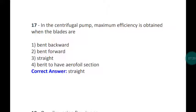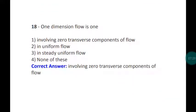Question number eighteen: One-dimensional flow is what? One-dimensional flow means it involves zero transverse components of flow. One-dimensional means any other direction has zero component. Transverse direction with zero component - that is known as one-dimensional flow.